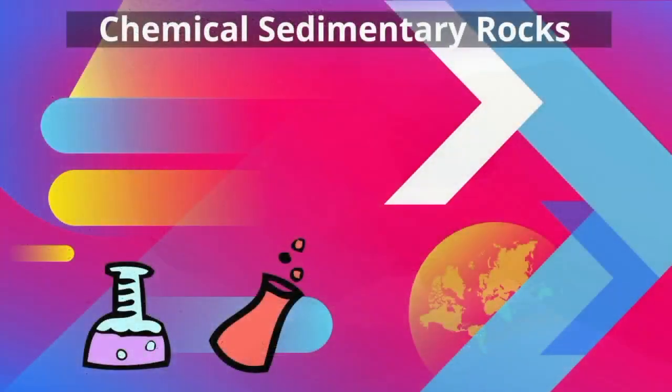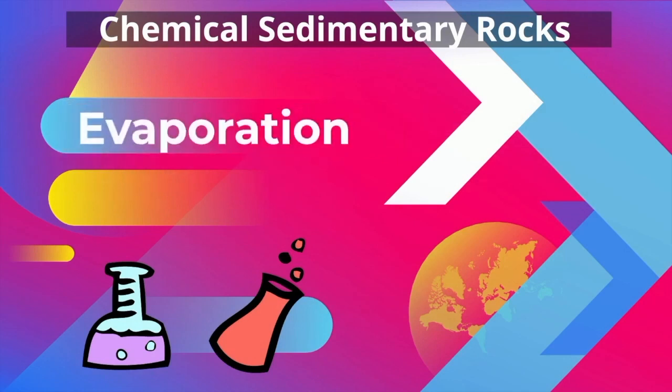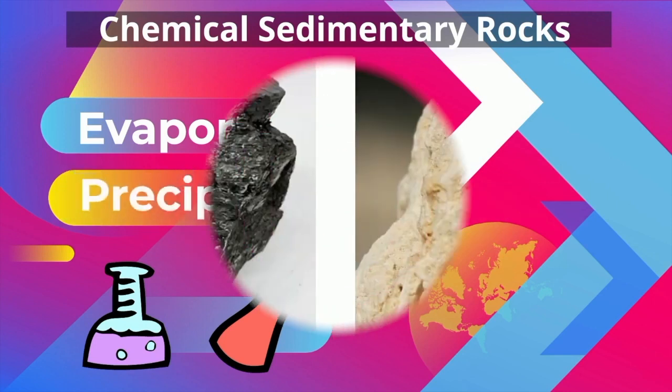In summary, chemical sedimentary rocks are formed by either evaporation of mineral-rich water or precipitation of mineral-rich water.